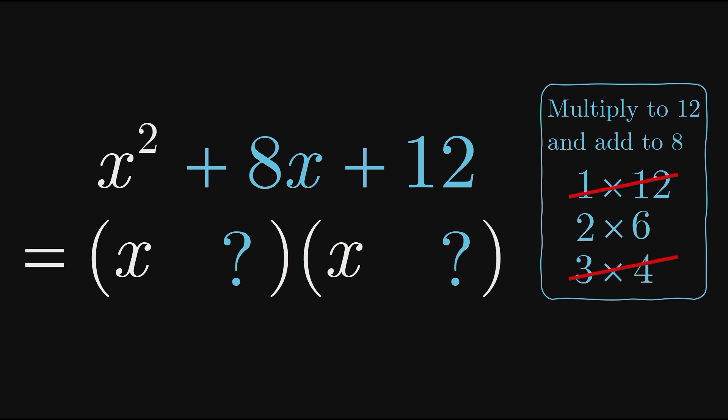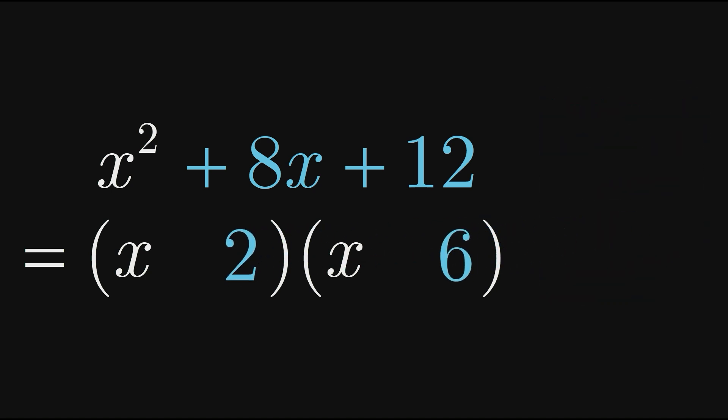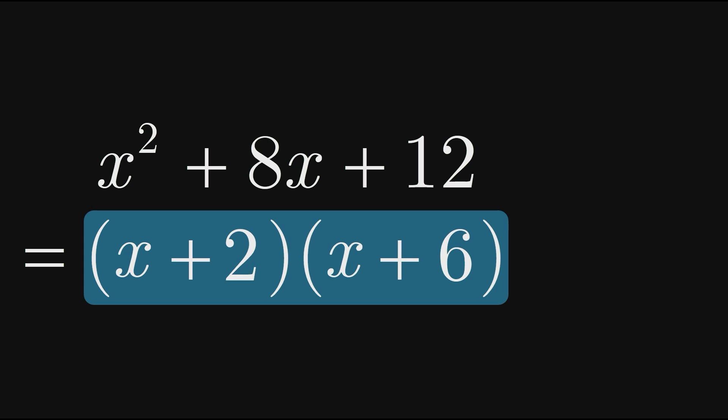Therefore we must add constants of 2 and 6 in our factors, giving us a final factored result of x plus 2 times x plus 6. Note that there are other ways to write this result. For example, we could switch the order of these factors to get a result of x plus 6 times x plus 2.